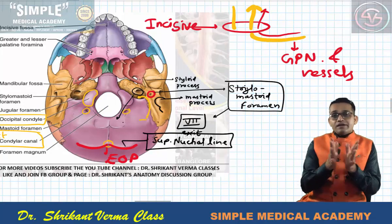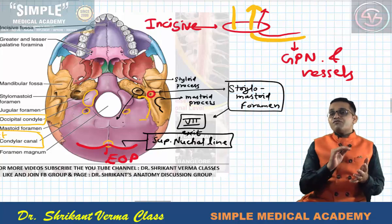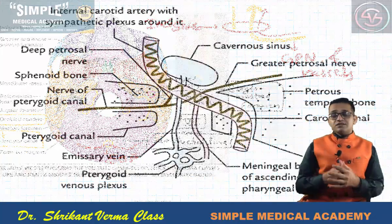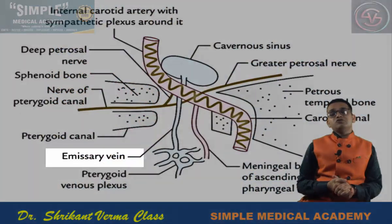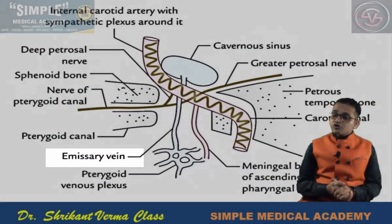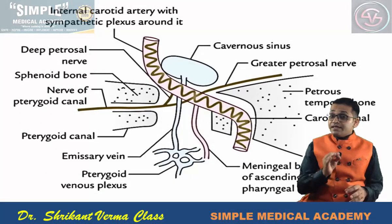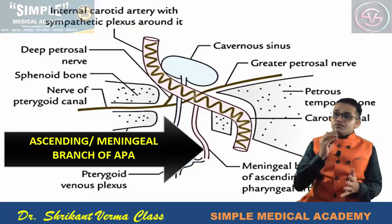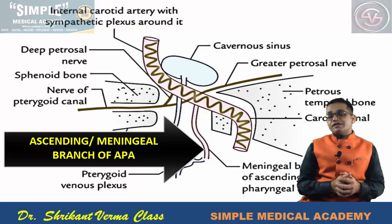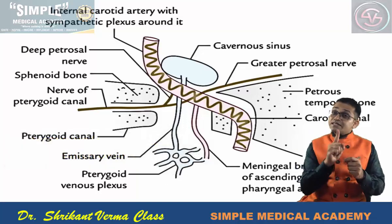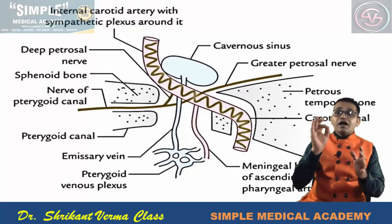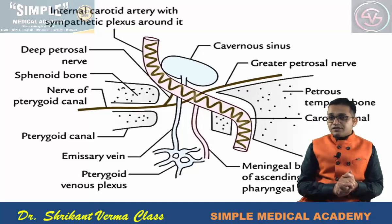The foramen lacerum is filled by cartilage in adult age, and no important structure passes through it. As seen in this image, an emissary vein passes through the foramen lacerum, along with one artery known as the ascending branch of the ascending pharyngeal artery. The pharynx is supplied by the ascending pharyngeal artery, a branch from the external carotid artery. This ascending pharyngeal artery gives a branch ascending into the cranial cavity.